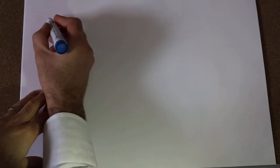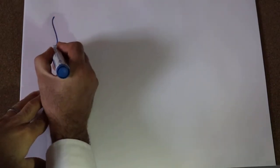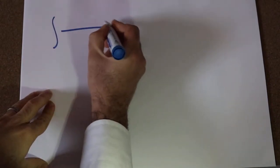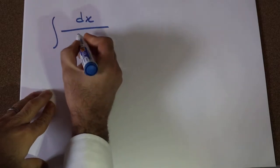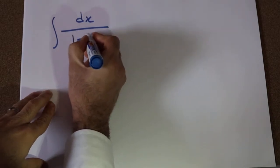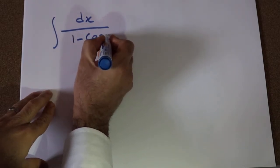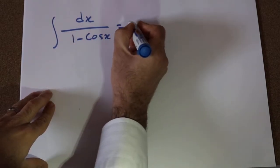Hi. I'm going to show you how to calculate the integral of dx divided by 1 minus cosine x.